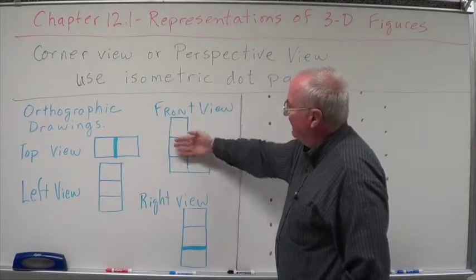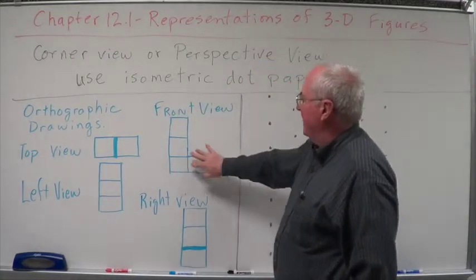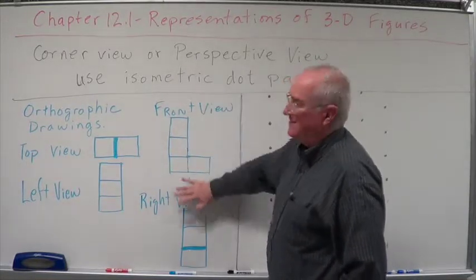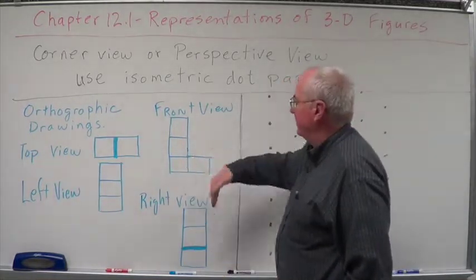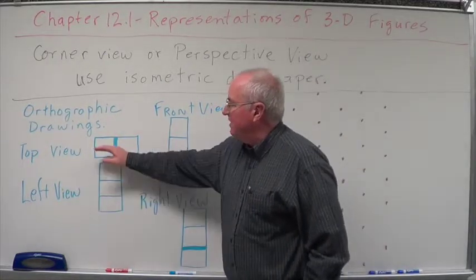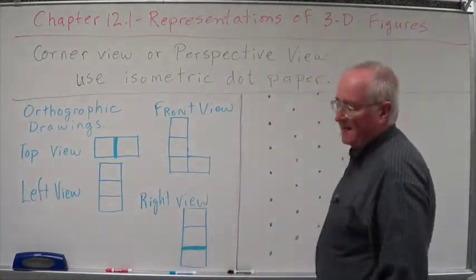Notice these. They don't have any extra heavy lines or double lines. This means these are all on the same plane. There's nothing behind or in front. Again, on the left view, those are all in the same plane.